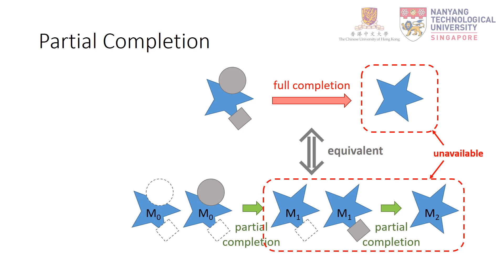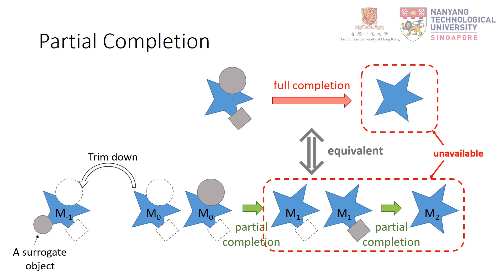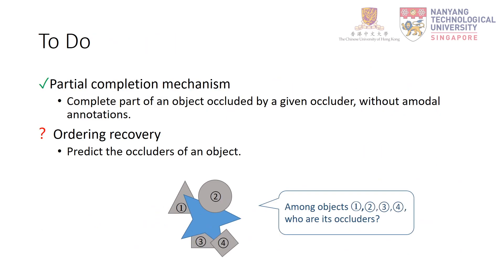What we have are merely M0 and its occluders. Our key idea is to further trim down M0 with a surrogate object to obtain M-1, where the surrogate object is a random modal mask chosen from the dataset. Then we perform partial completion on M-1 to recover M0. This process is trainable. The trimming-down and recovering strategy is the foundation of our self-supervised solution of CMD occlusion. We propose a partial completion mechanism to complete part of an object occluded by a given occluder without using amodal annotations. This naturally raises the question: who are the occluders of an object?